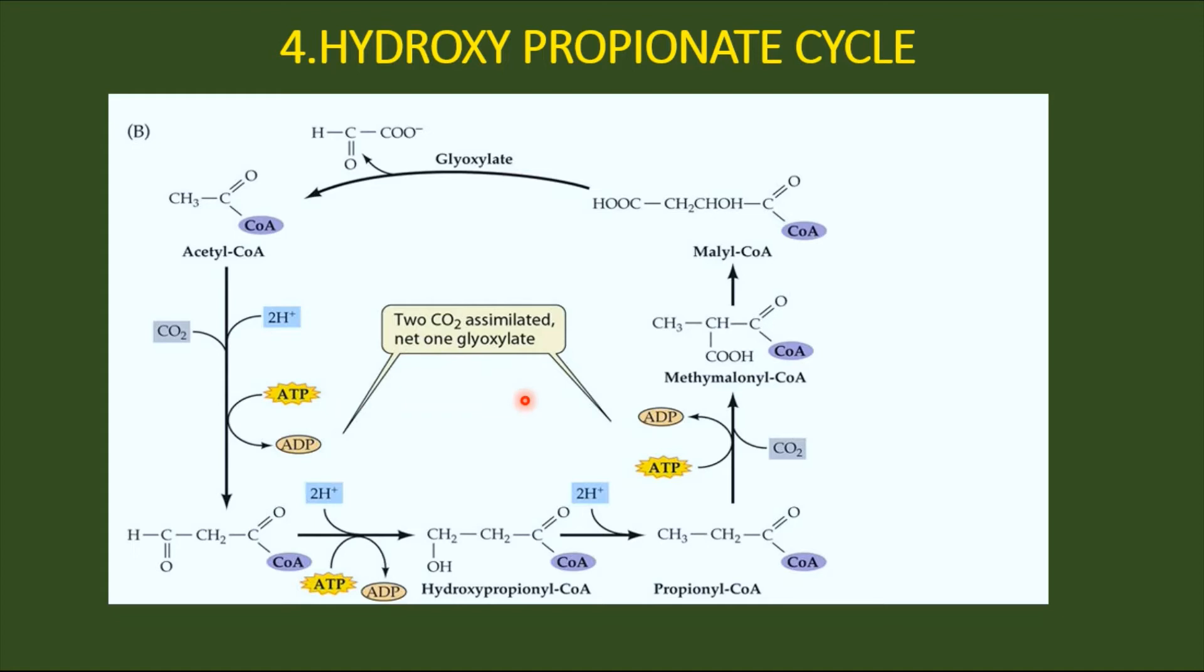It uses either hydrogen or H2S as electron donors. In this hydroxy propionate pathway, two molecules of carbon dioxide are involved to reduce that into molecules of glyoxylate. Now acetyl-CoA is carboxylated—that means fixation of carbon dioxide occurs here, and one more is here, so two molecules of carbon dioxide are fixed.